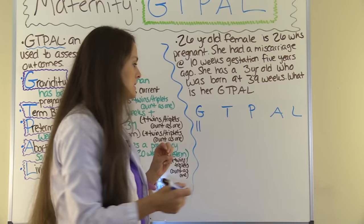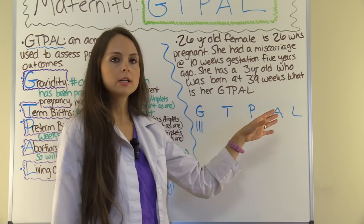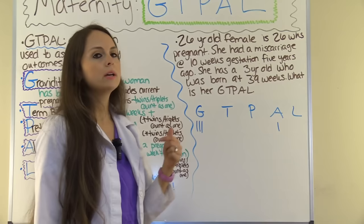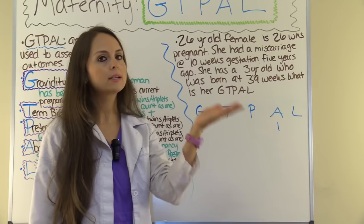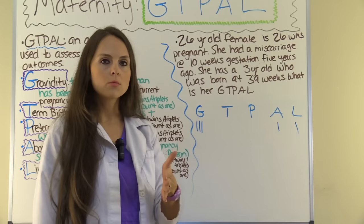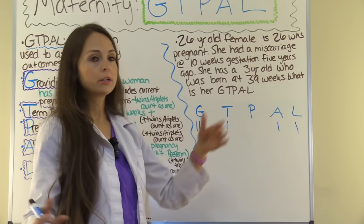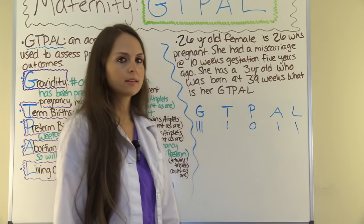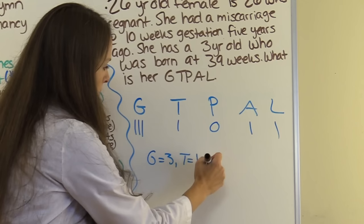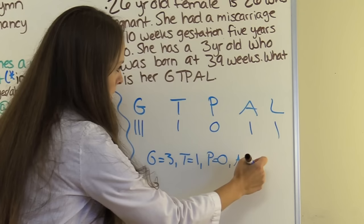Now let's work out term, preterm, abortion, and living. She had a miscarriage, so A stands for abortion or miscarriage — we put that under A. It was at 10 weeks gestation, so it does not go under preterm since preterm requires 20 weeks or more. She has a three-year-old currently living, so that goes under L. She was born at 39 weeks, and 37 weeks onward is considered term, so it goes under T. There are no preterm children. The final answer is: G=3, T=1, P=0, A=1, L=1.